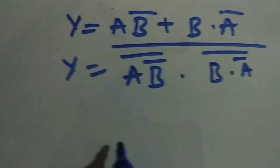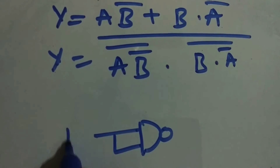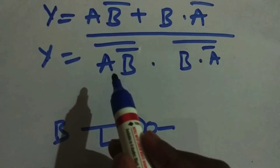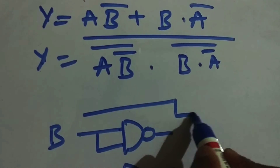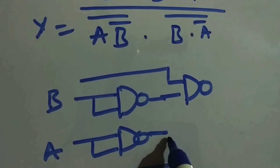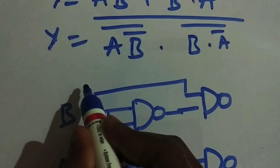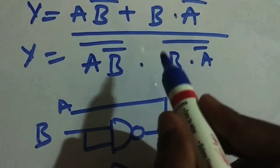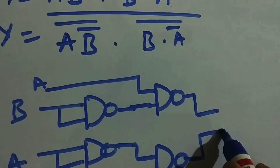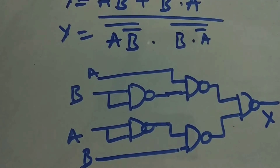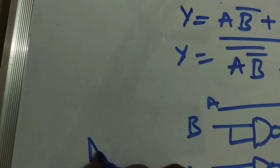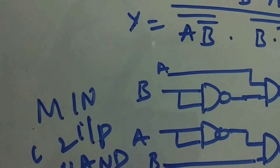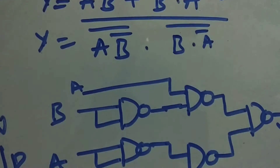First I implement B bar and A bar using individual NAND gates as inverters. Then A is given with B bar to a NAND gate, and B is given with A bar to another NAND gate. These two outputs go to a final NAND gate to give Y. That's five NAND gates total. However, this is not the minimum number of two-input NAND gates — we have one extra NAND gate and can simplify further.